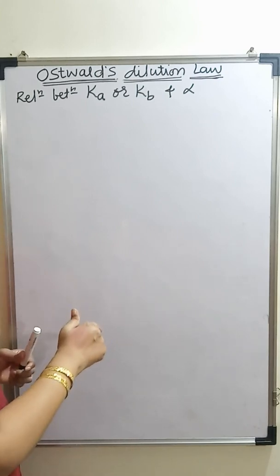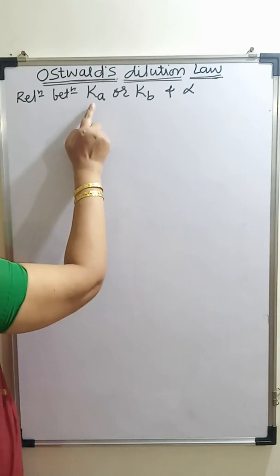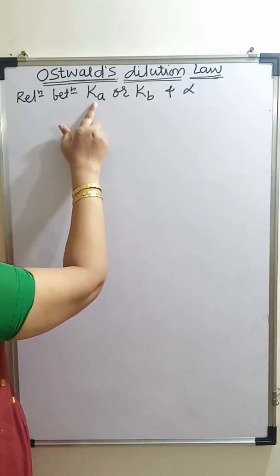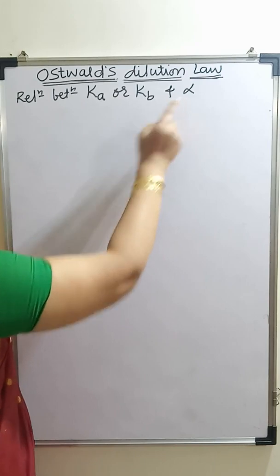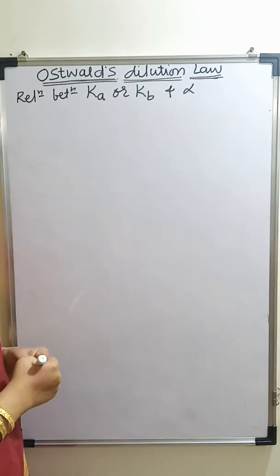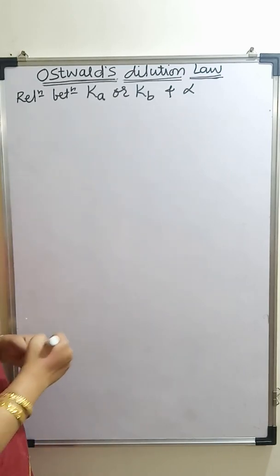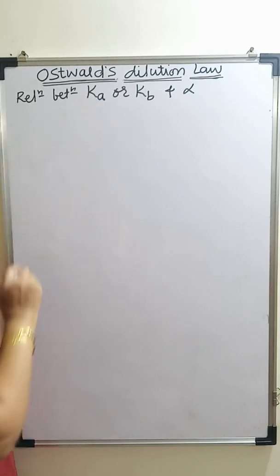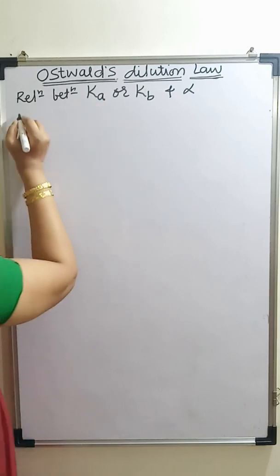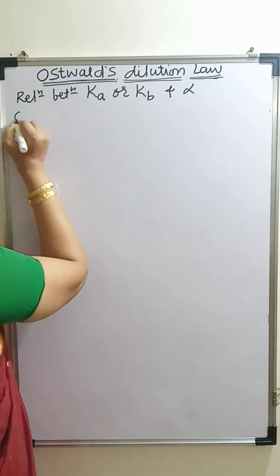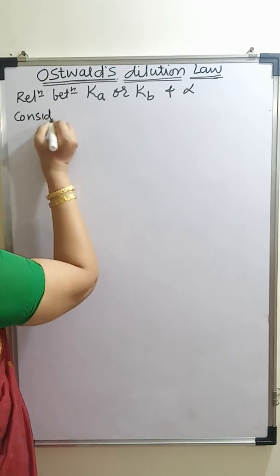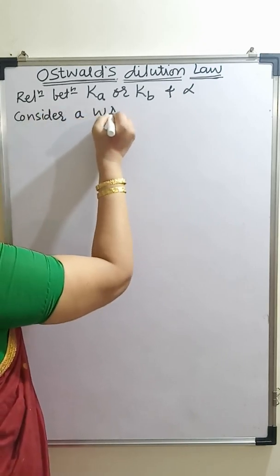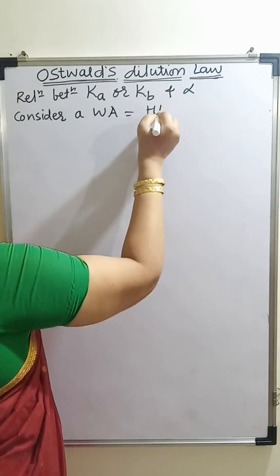In this first part, I will be taking the relation between the dissociation constant of a weak acid and degree of dissociation. Let us start with the derivation. I will be considering a weak acid, that is HA.